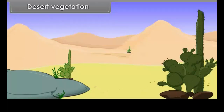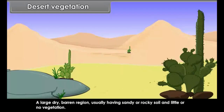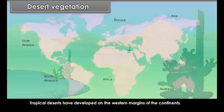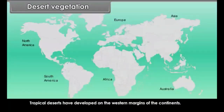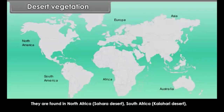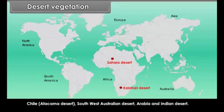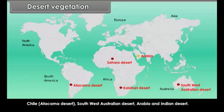Desert Vegetation: A large dry barren region usually having sandy or rocky soil and little or no vegetation. Tropical deserts have developed on the western margins of the continents. They are found in North Africa (Sahara Desert), South Africa (Kalahari Desert), Chile (Atacama Desert), the Southwest Australian Desert, Arabia and the Indian Desert.